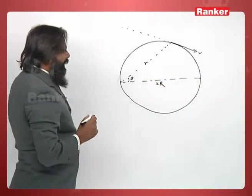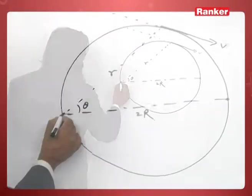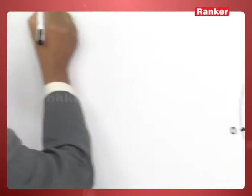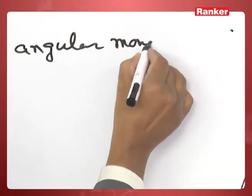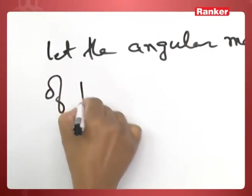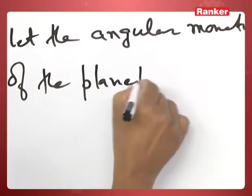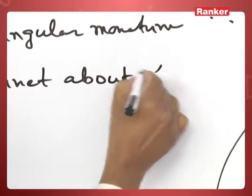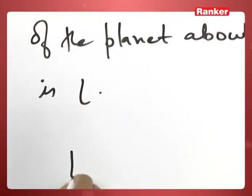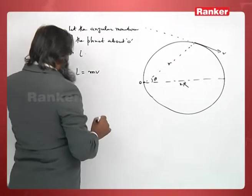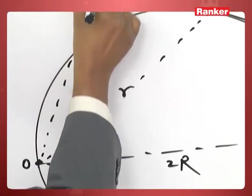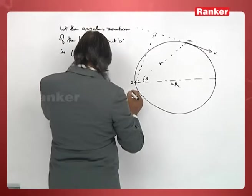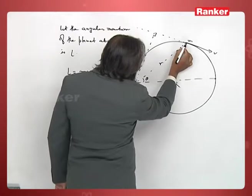Now let L be the angular momentum of this system about this point O. The angular momentum of the planet about O is L. We have L is mv, angular momentum is mass times velocity into this perpendicular distance. If I drop a perpendicular up to here, then this distance. In order to know this distance let us join these two points.